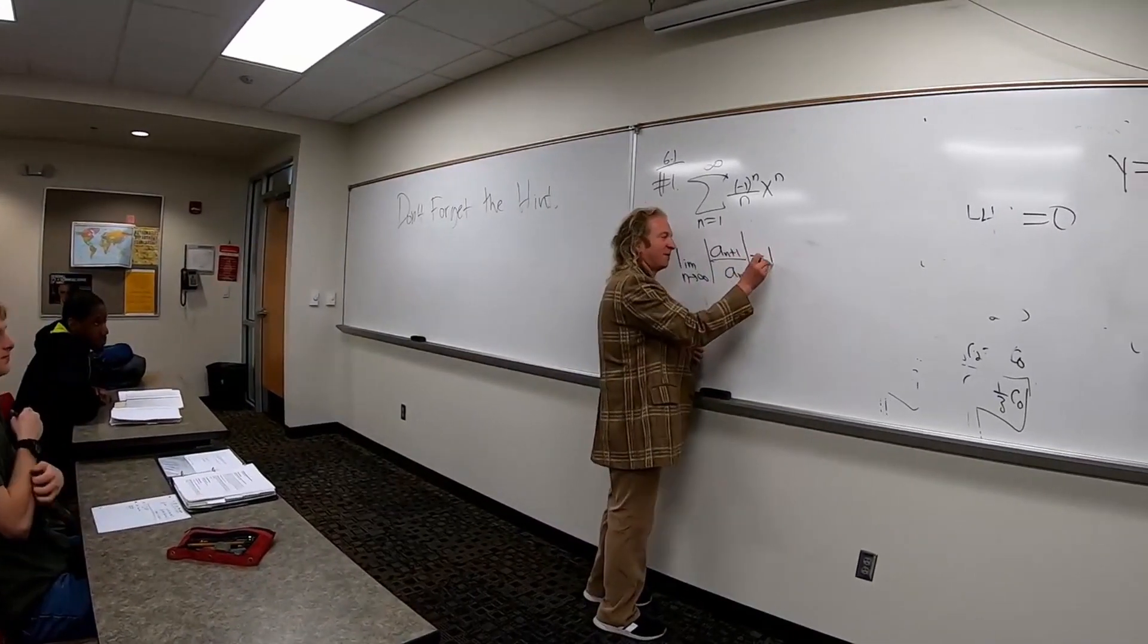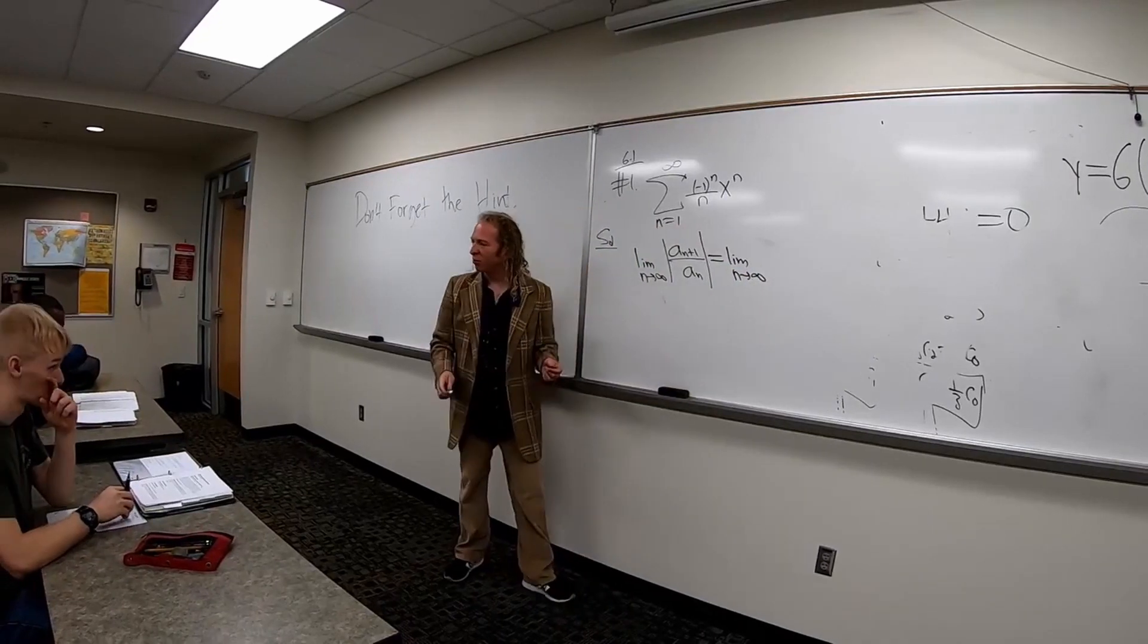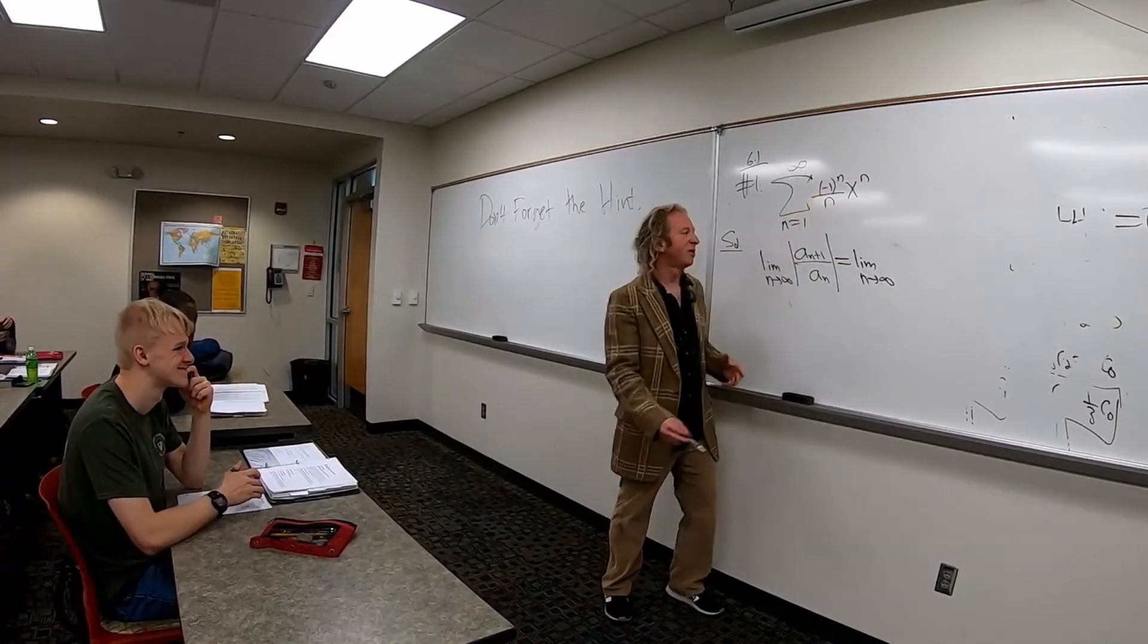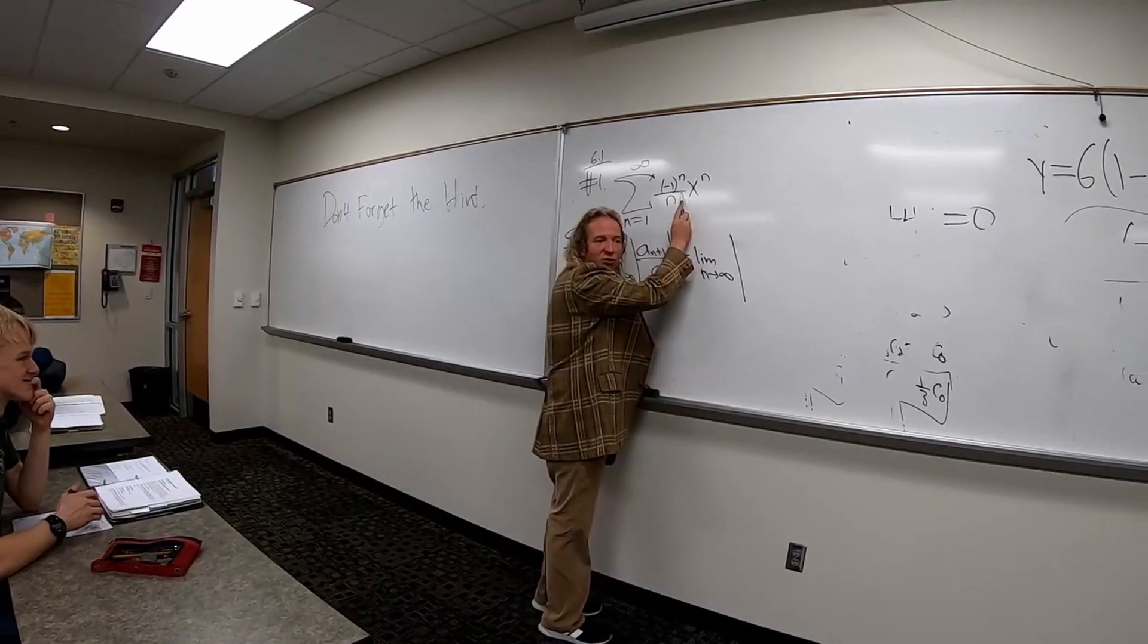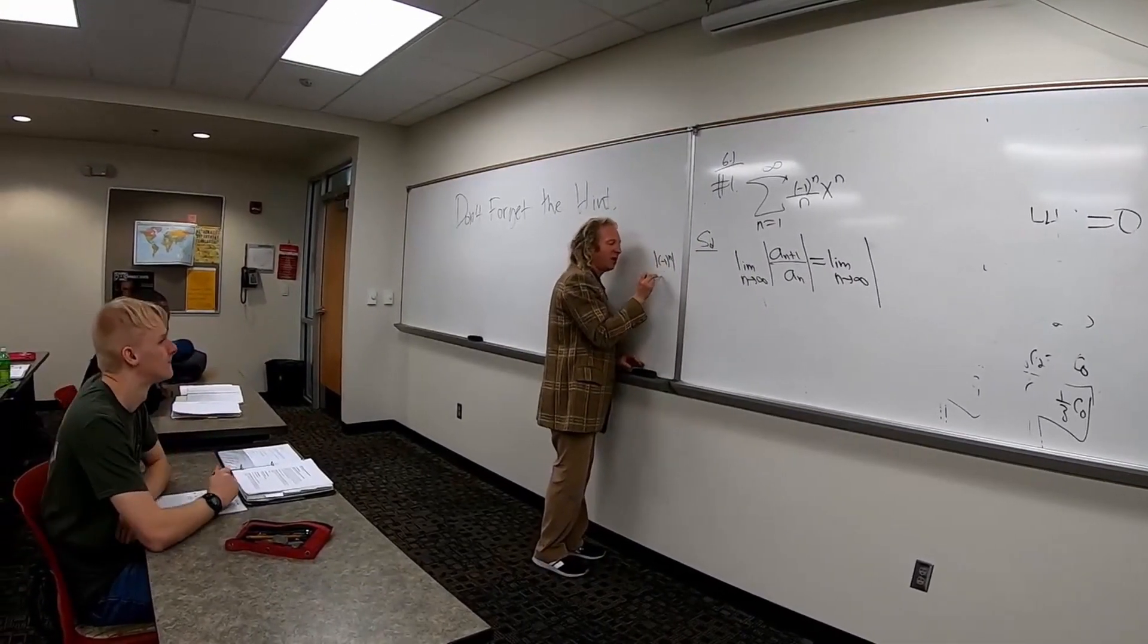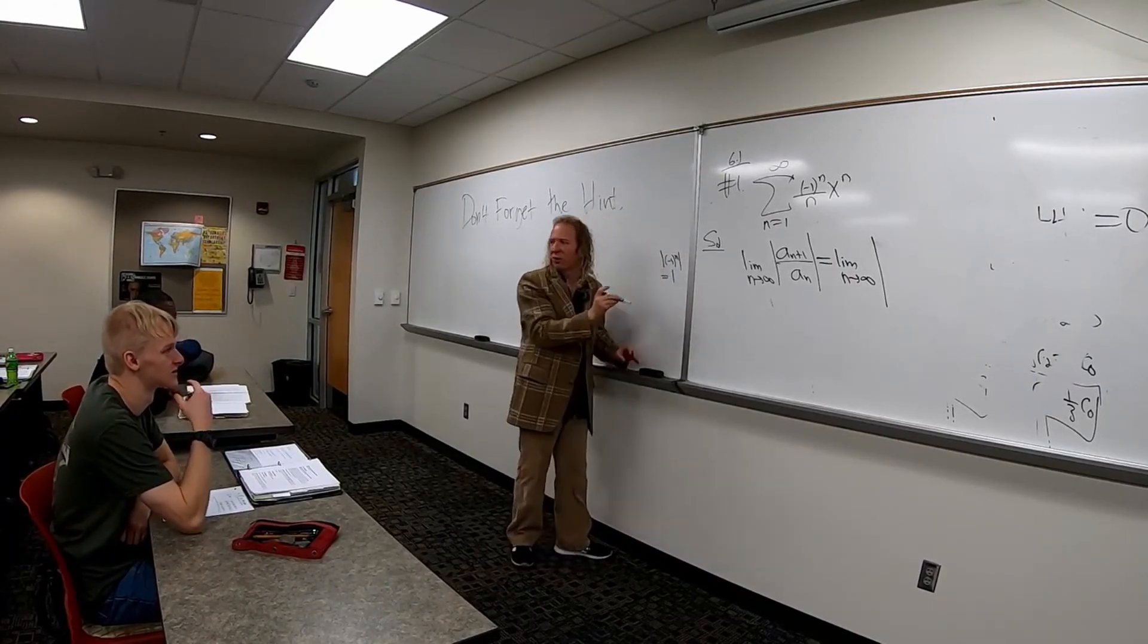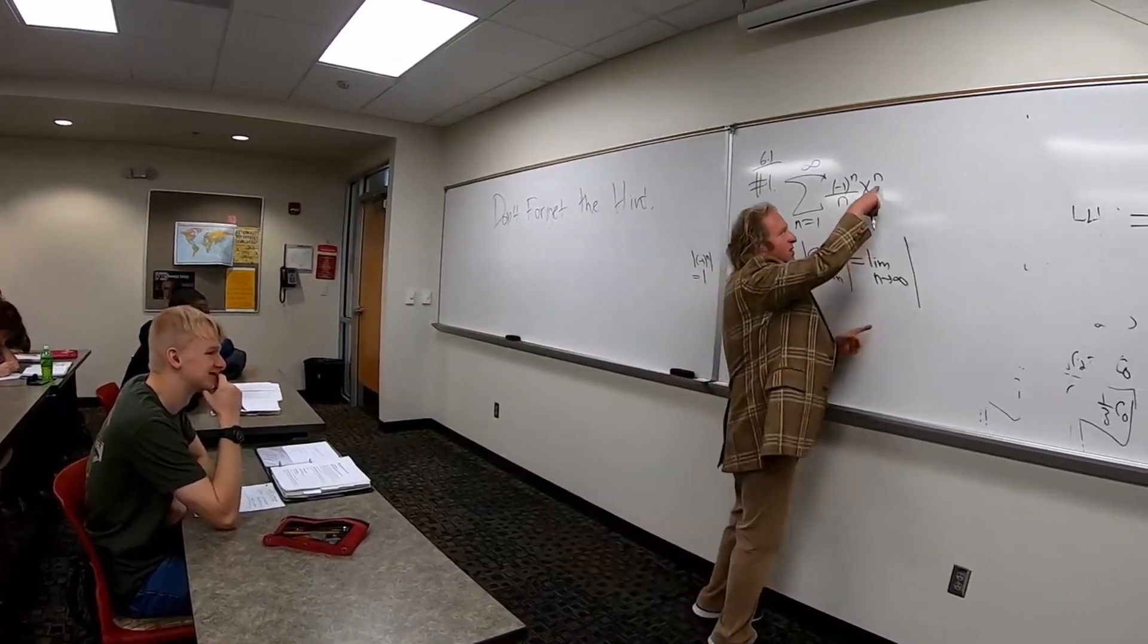All right, so let's do it. So we have a limit, n goes to infinity. So a sub n plus 1 means we replace all the n's with n plus 1's, right? So we have absolute value. Now the negative 1 to the n goes away. You can just drop it.